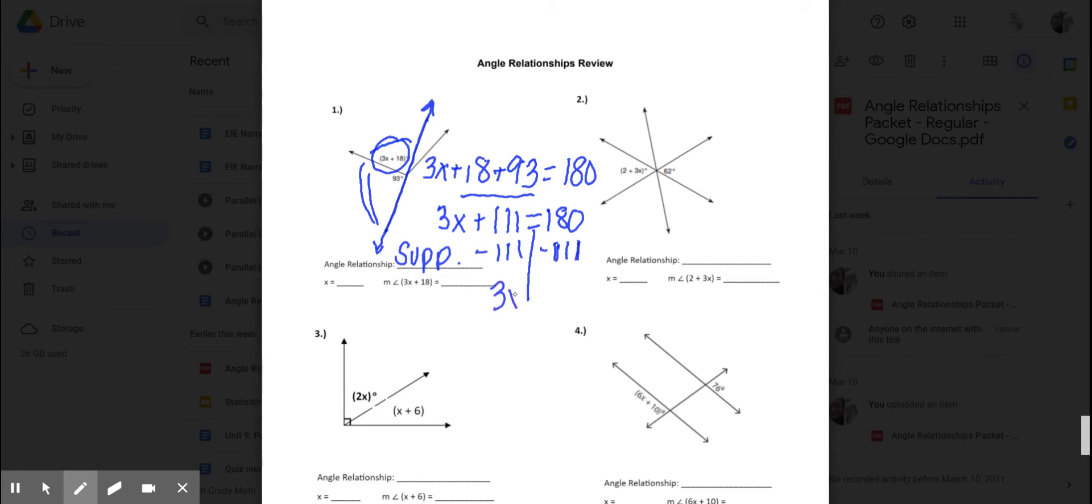And then, I get 3x equals, I think I should ask her again, what 180 minus 111 is. Okay, Google. What's 180 minus 111? See, she's still thinking. I already got the answer. It's this answer.